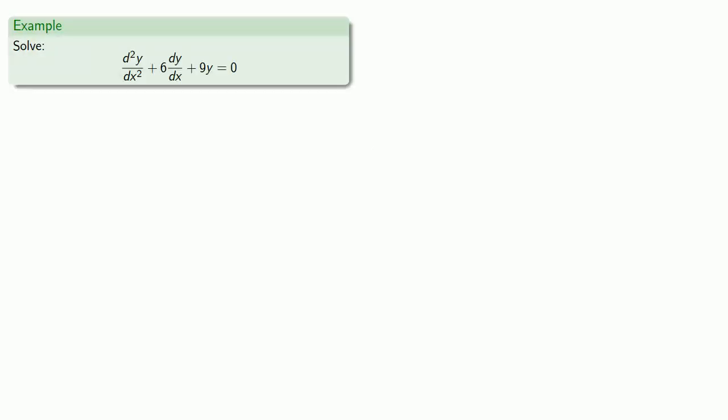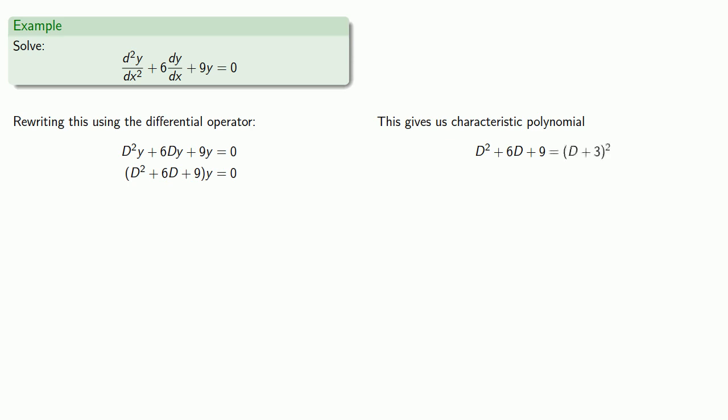So back to our original problem, rewriting our differential equation using the differential operator. Our characteristic polynomial is d squared plus 6d plus 9, which is the same as d plus 3 squared. This has root minus 3 with multiplicity 2.